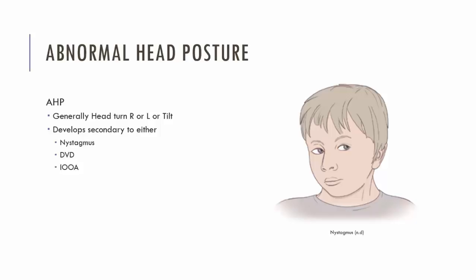Some patients with an infantile esotropia may also have an abnormal head posture, such that they'll turn their head or tilt their head. If we look at this patient here, they've turned their head to the right and tilted it slightly to the right as well. This is usually secondary to either nystagmus, DVD, or an inferior oblique overaction — what they're trying to do is achieve either an improvement in visual acuity, as with nystagmus, or they're trying to achieve BSV.